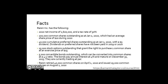40,000 cumulative preferred shares outstanding as at January 1st, 2020, with a $3 dividend. Dividends on preferred shares have not been paid in 2019 or 2020. 15,000 stock options outstanding that grant the right to purchase one common share at an exercise price of $15. 5,000 convertible bonds outstanding, which can be converted into common shares at a 4 to 1 ratio. The bonds pay annual interest at 4% and mature on December 31st, 2023.